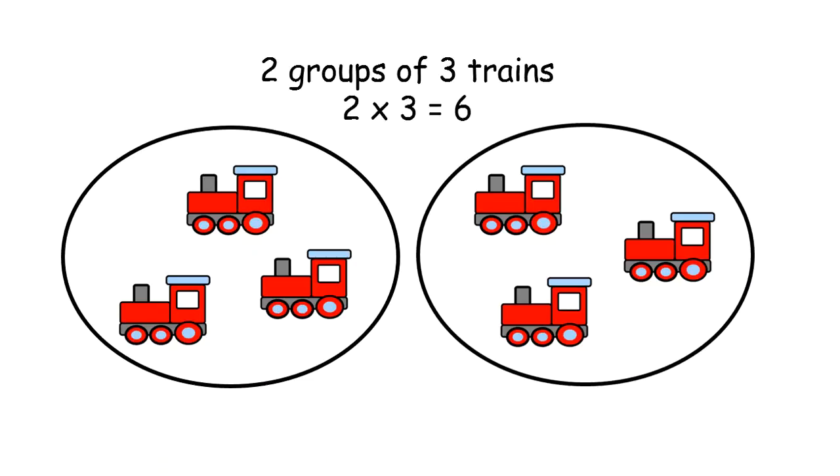Two groups of three trains can be represented in multiplication as two times three which is six because there are one, two, three on the left, four, five, six when you combine with the right.